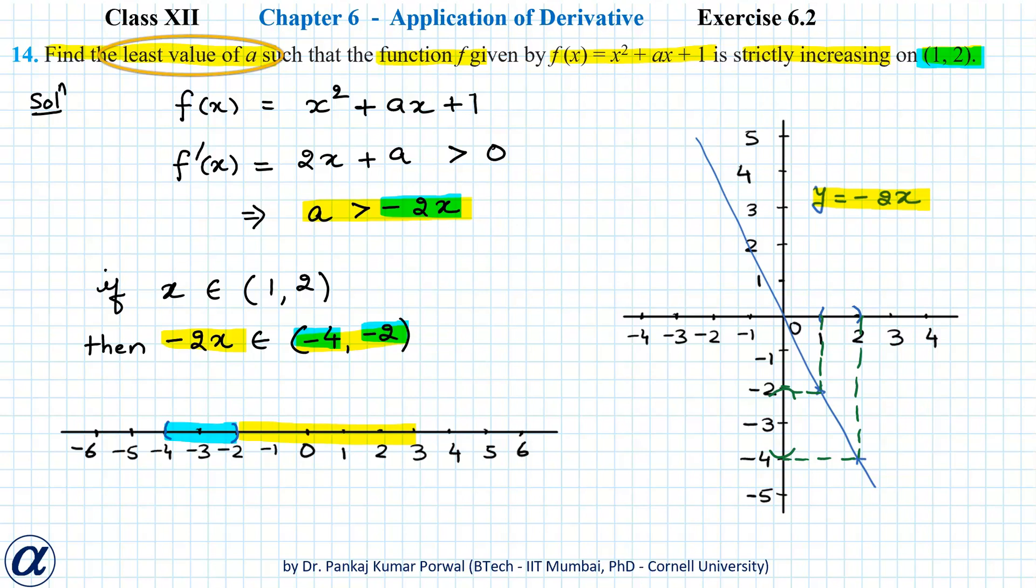Any number lying to the right of the interval will be greater than every number in this interval. We want the least value of a, so all numbers starting from -2 and bigger than -2 will be greater than -2x, and the least of those numbers will be -2. So our answer is a = -2.